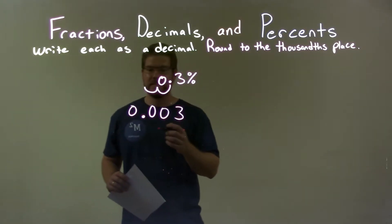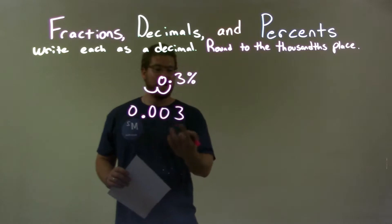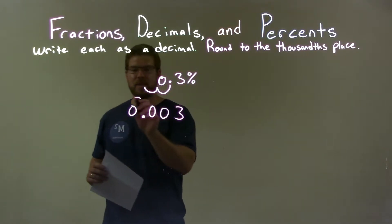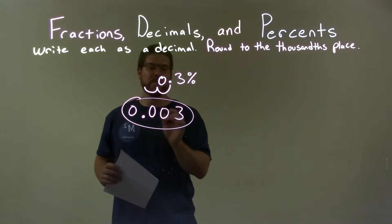This is already rounded to the thousandths place because the three is in the thousandth place. And so our final answer is 0.003.